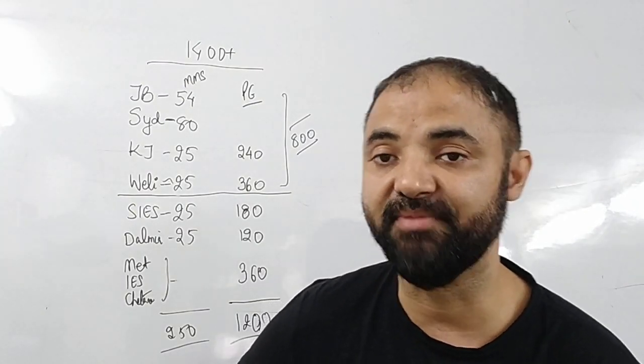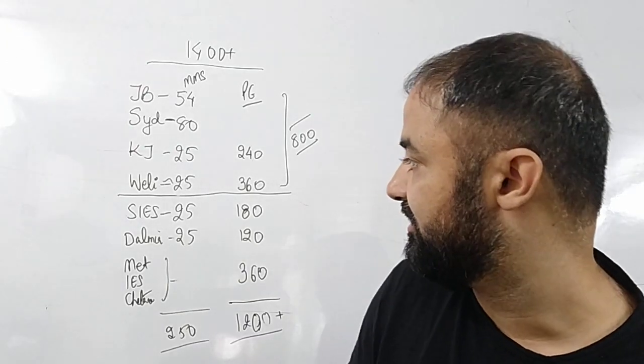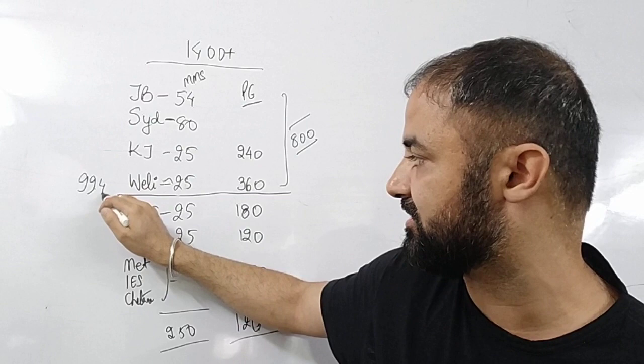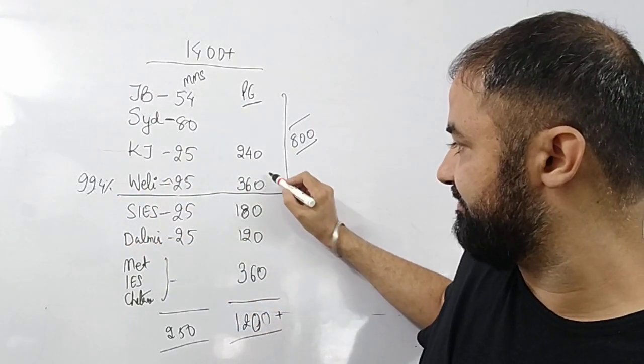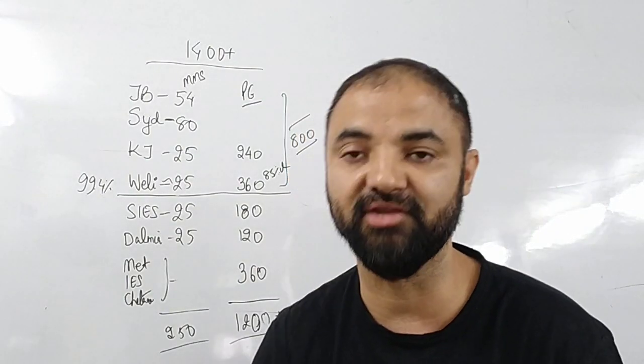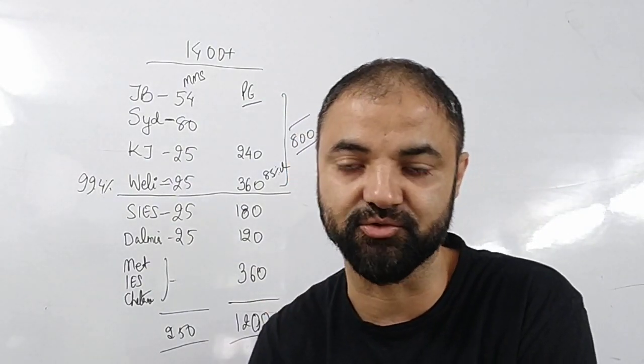And the best part of PGDM is cutoff is very, very low. Willinker, for example, cutoff is 99.4 percentile. And PGDM may Willinker ka cutoff is approximately 85 percentile. If you have more than 85 percentile, you will get a call from B-School.